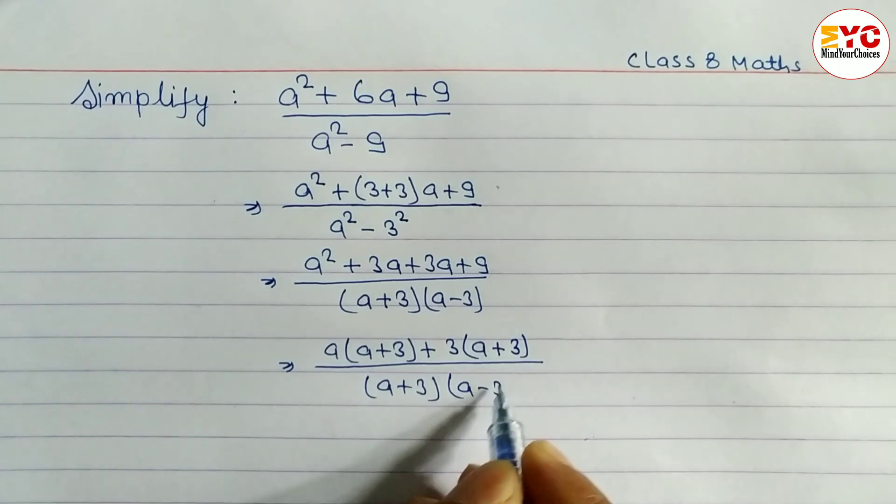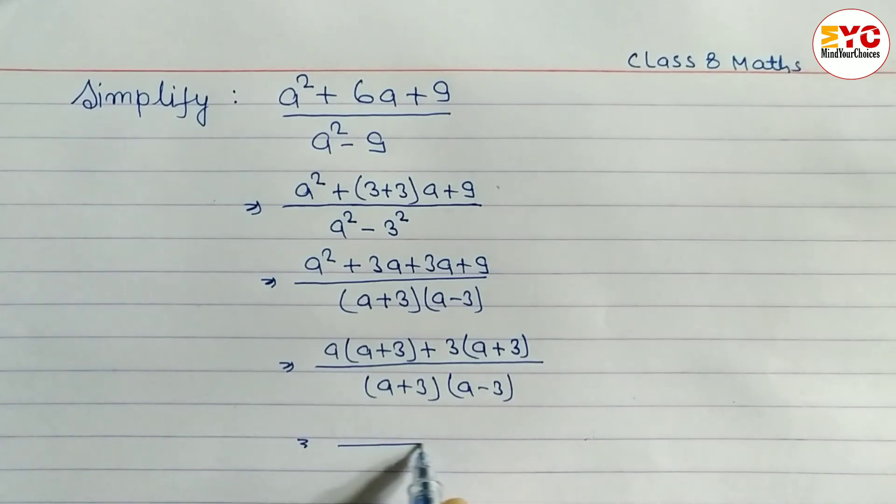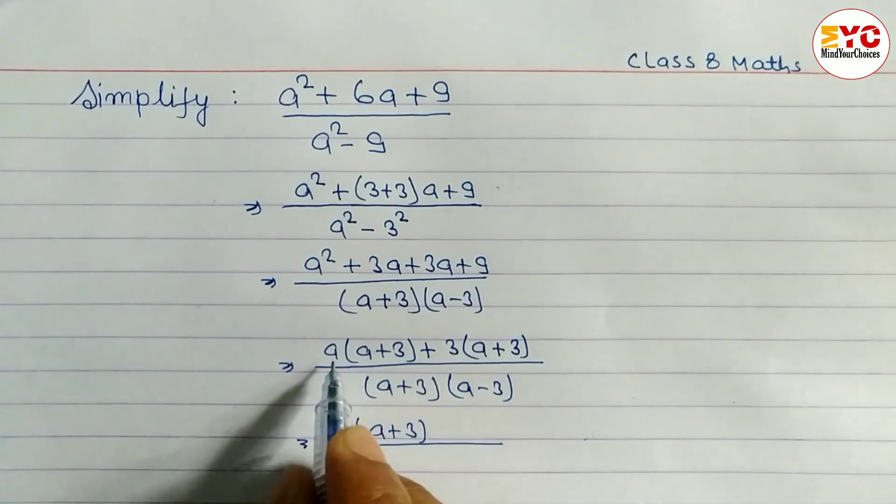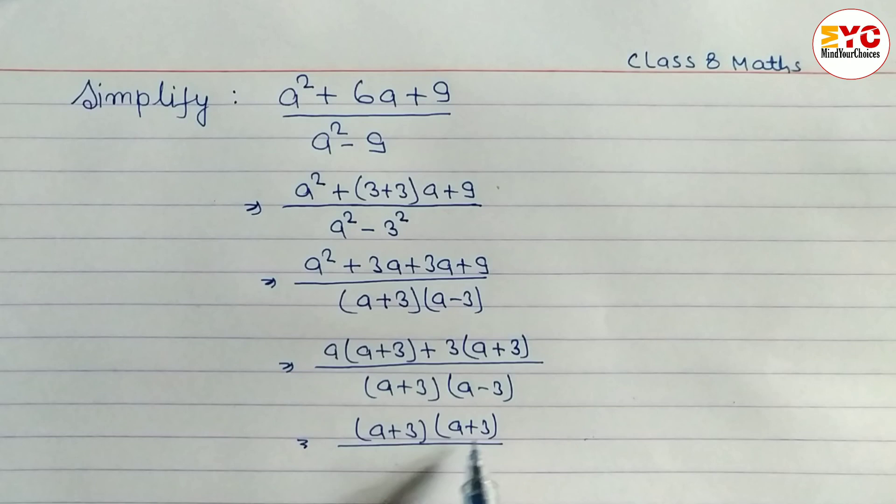After this you can see here a plus 3, a plus 3. We can take common a plus 3, and what is remaining here? a plus 3. So we can write a plus 3. In denominator what is here? We can write a plus 3, a minus 3.